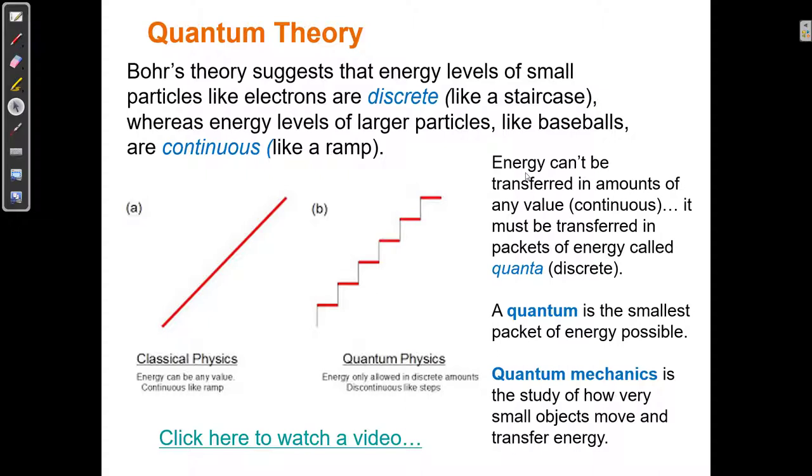So around the same time that Einstein was working on relativity, others were working on theories that would help to describe the motion of very small objects. So one of those theories was Niels Bohr, who suggested that energy levels of small particles like electrons are discrete like a staircase, whereas energy levels of larger particles like baseballs are continuous like a ramp.